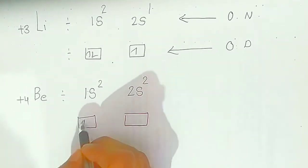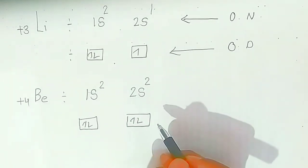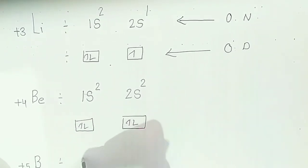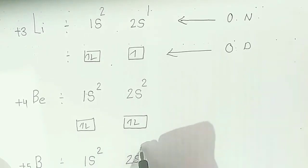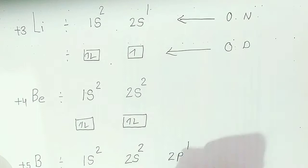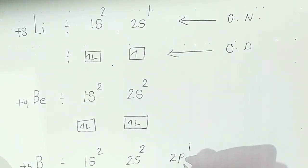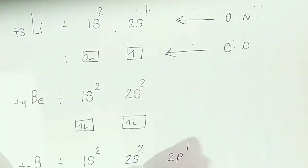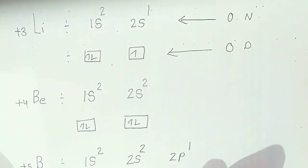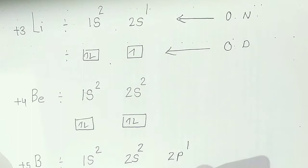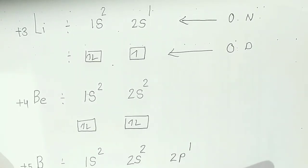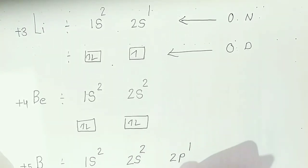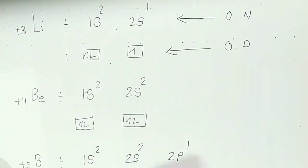For boron, atomic number is plus five. The electronic configuration is 1s2 2s2 2p1 — the fifth electron goes to the p orbitals. The p orbital can occupy a maximum of six electrons. In the orbital diagram, the s orbital has one sub-cell, while the p orbital has three sub-cells: px, py, and pz. The orbital diagram for boron is: 1s2 2s2 2p1.